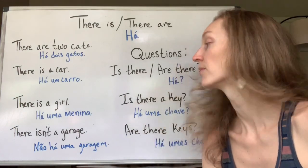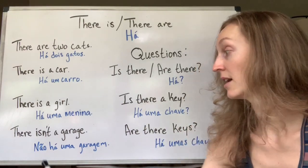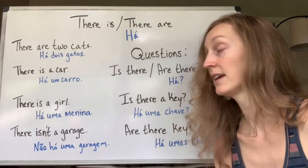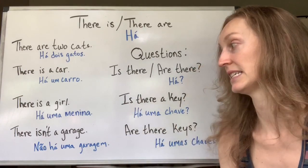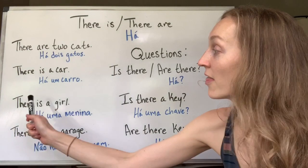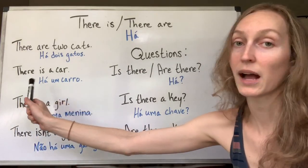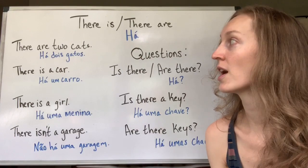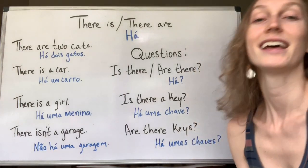Quando uma coisa é negativa, quando não tem: there isn't a garage — não há uma garagem. There isn't é contração de 'is not'. A gente tirou o 'o' para fazer a contração, por isso tem um apóstrofe no meio do 'n' e o 't', onde seria o 'o'. There is not a garage → there isn't a garage. Se não tem uma menina: there isn't a girl. Se não tem um carro: there isn't a car. Se não tem dois gatos: there aren't two cats.